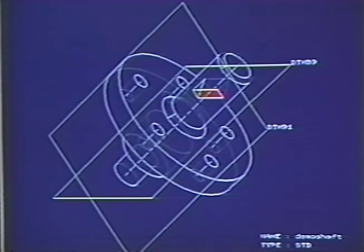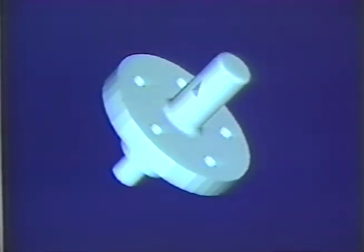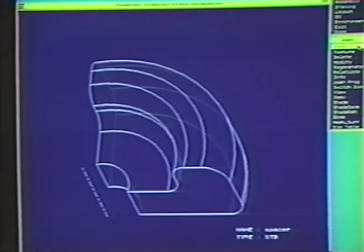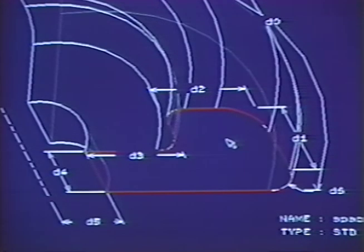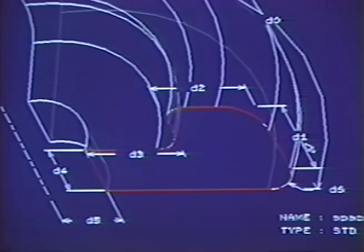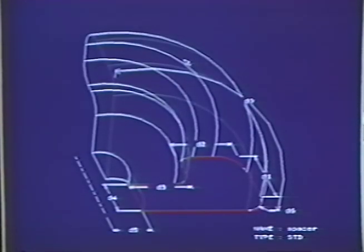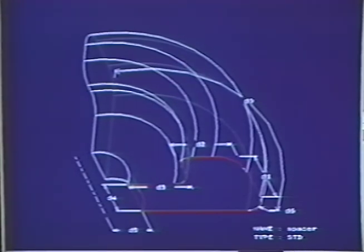Now we can shade the finished part. ProEngineer allows you to define functional relationships between parts, assemblies, and parameters. In this example, we'll look at a relationship between parameters. We'll make thickness d1 equal to thickness d4 plus 2 times d0, which is the angular sweep parameter — relating the height of the part to the degrees of sweep around the center line.